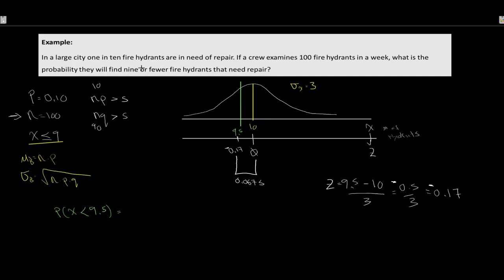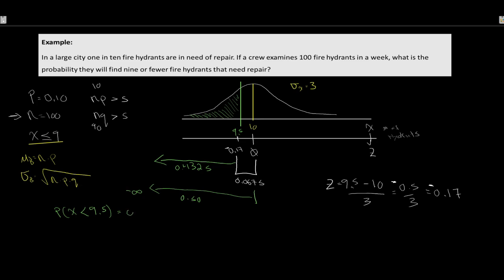We want the probability of 9 or fewer, which is the left-tail area. From negative infinity to zero is 50%. The area between z = −0.17 and zero is 6.75%, so the left-over portion is 0.5 − 0.0675 = 0.4325. There is a 43.25% chance of finding 9 or fewer fire hydrants in need of repair.